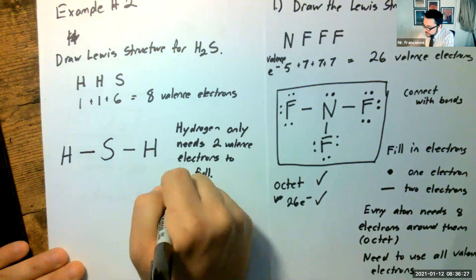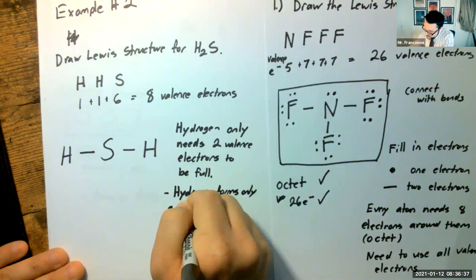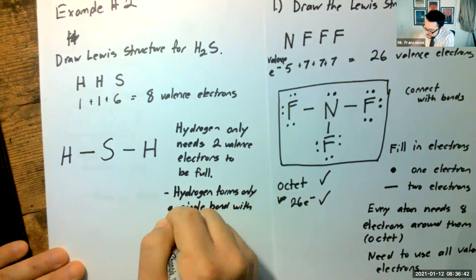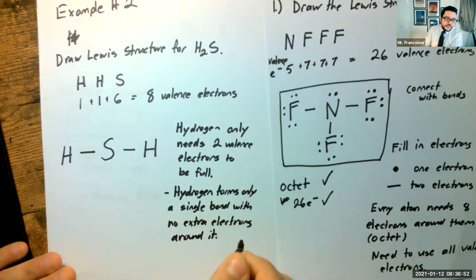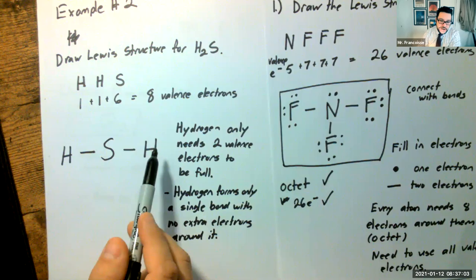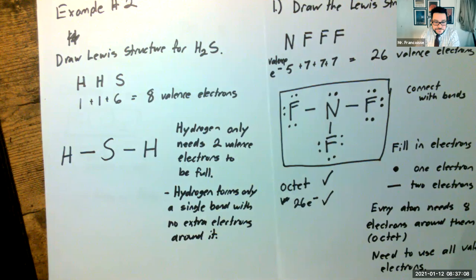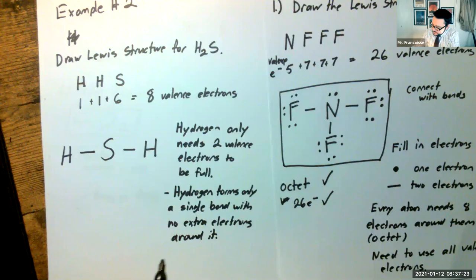Another way of looking at this: hydrogen only likes to form one bond with no extra electrons around it. You're never going to see hydrogen covered in extra lone pair electrons — it's just going to be a single bond. Think of hydrogen as dead ends on molecules; they don't have any links to connect anything else. That means hydrogen can't really go in the center of a molecule since it only makes one bond — it typically goes on the outside.